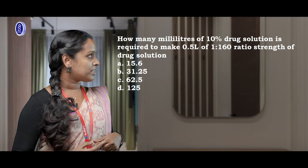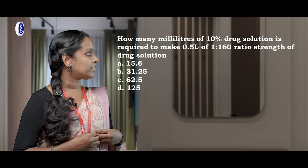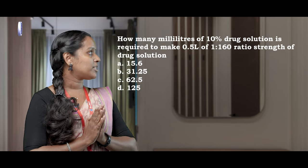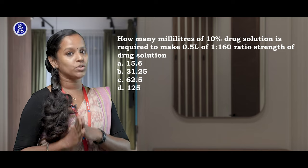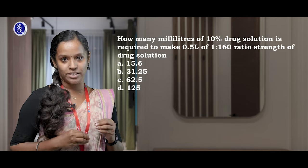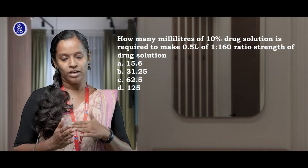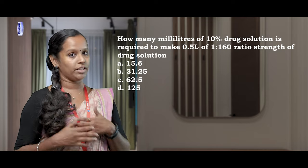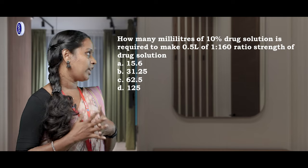Let's start with the second question. How many milliliters of a 10% drug solution is required to make 0.5 litres of a 1 to 160 ratio strength of the drug solution? In this question you can see a percentage — 10% drug solution. An important point: when you see a percentage, consider it as grams in 100 ml. So 10% means 10 grams in 100 ml, and 15% would mean 15 grams in 100 ml.